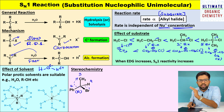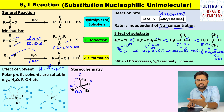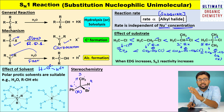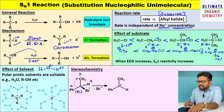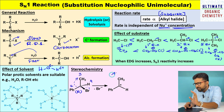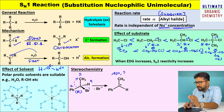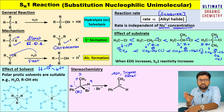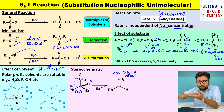This compound is subjected to SN1 reaction. You need to look at the rate determining step — that is the formation of carbocation. The Br minus is removed, and as a result a carbocation is formed. This carbocation is SP2 hybridized and occupies trigonal planar geometry.